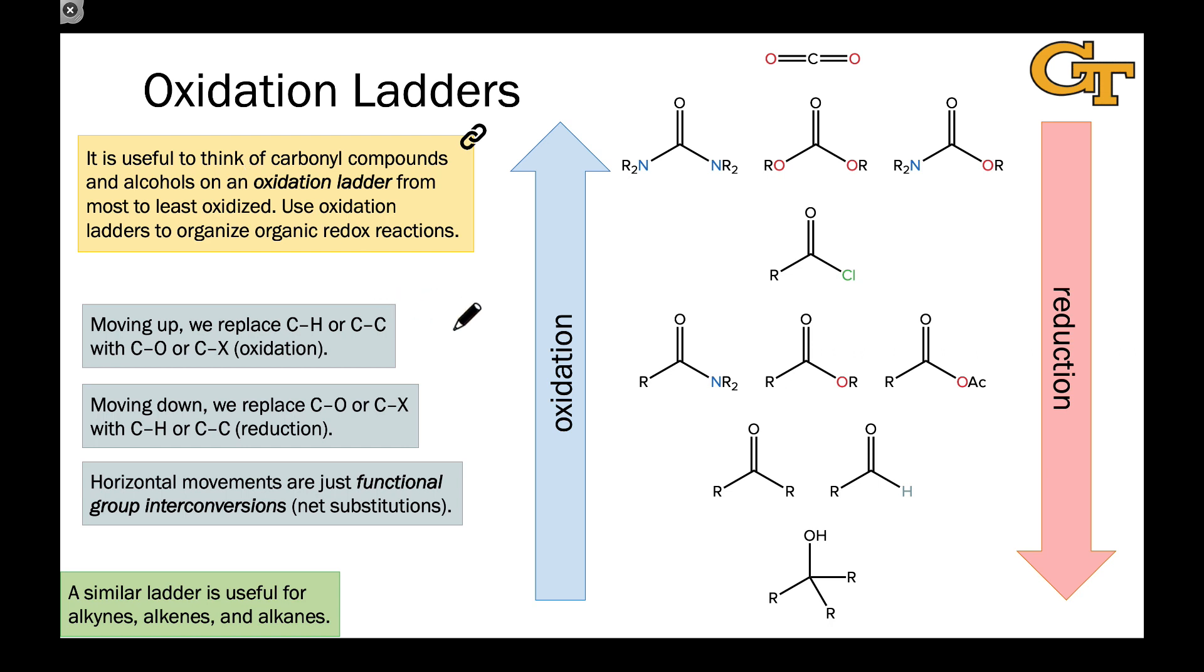Now that we have the oxidation number formalism, we can introduce the idea of an oxidation ladder, which is a hierarchy or an ordering of compounds from most to least oxidized. We can use oxidation ladders to organize reactions as well, distinguishing between oxidation and reduction processes, moving up or down the ladder, and functional group interconversions or functional group interchanges or substitutions that involve a change in functional group type without a change in oxidation number.